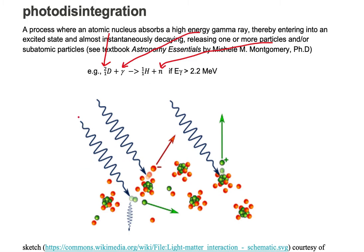So here is our high-energy gamma ray coming in, striking a nucleus, causing the nucleus to be in a temporary excited state, and it almost immediately spontaneously decays, releasing some kind of particle or subatomic particle.